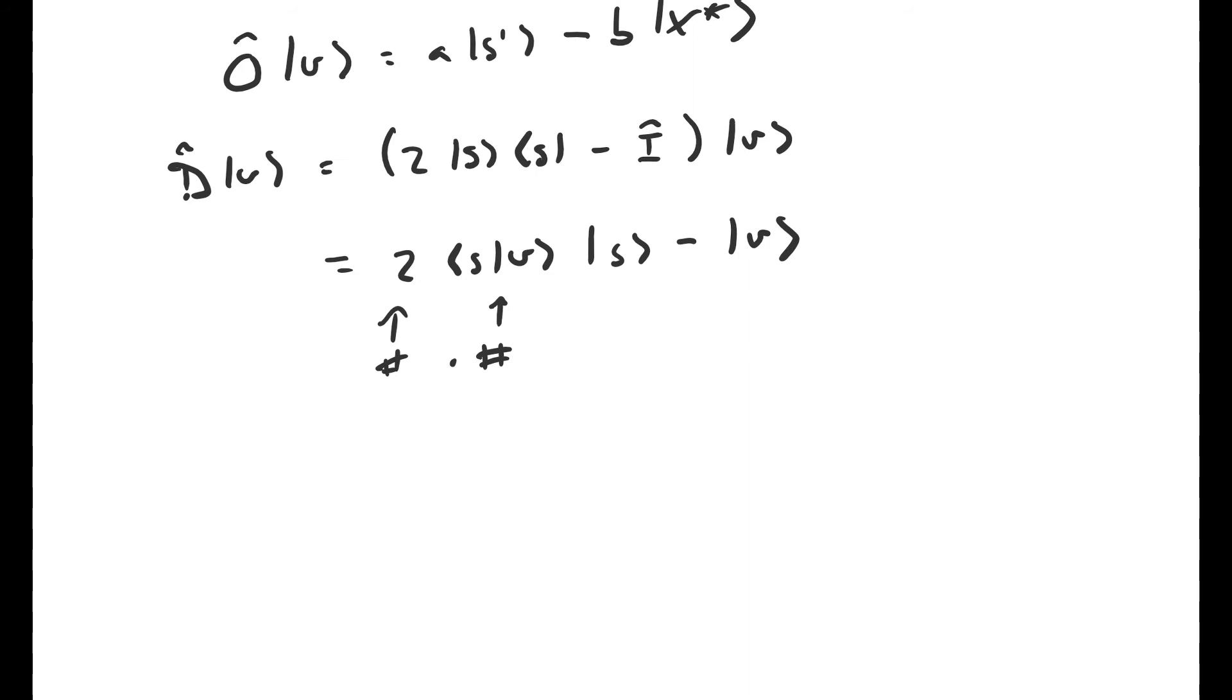So what we have here is a scalar multiple of the vector s minus the vector v. Now, s and v are both vectors in this subspace. So if we take a linear combination of them, we end up with another vector in this subspace. So the result of applying D to the vector v is another vector in this subspace.